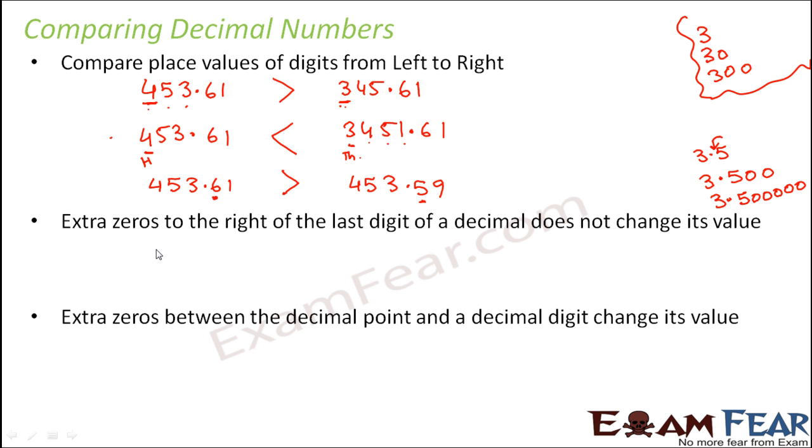So let us look at some more examples. Let us say you have a number 453.615 and you have another number 453.61. So which one is greater? Here you see all the five digits are the same. Here you have a sixth digit which is five, and here you do not have a sixth digit. So let us assume that the digit is zero because having a zero or not having a zero doesn't make any difference. So which is greater, five or zero? Five. So this number is greater.